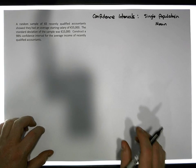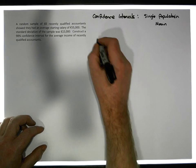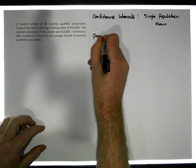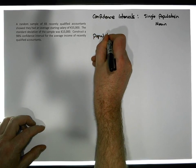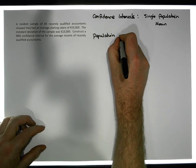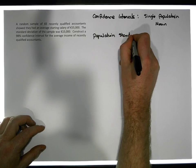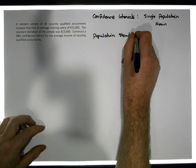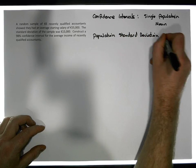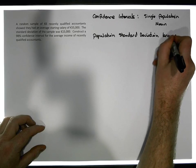Let's just keep in mind that there are two formulas that we could choose from. The first formula is dependent on whether we know the population standard deviation or not — so whether the population standard deviation is known.